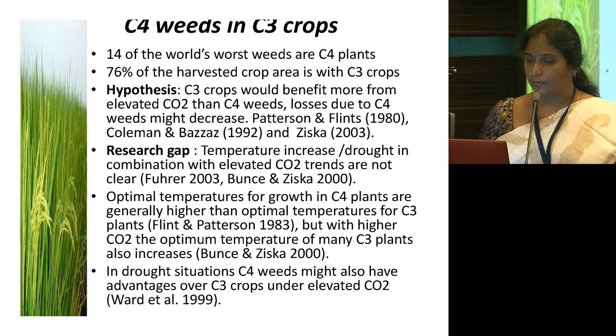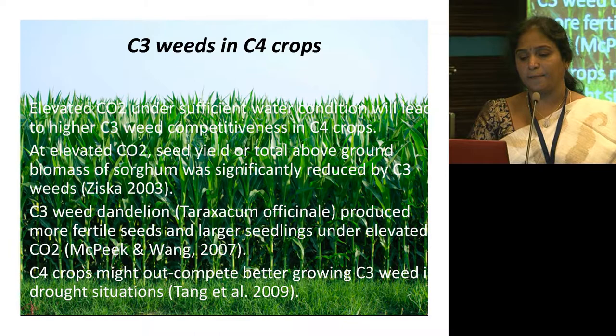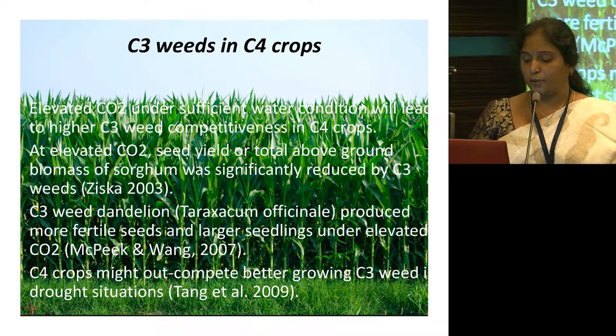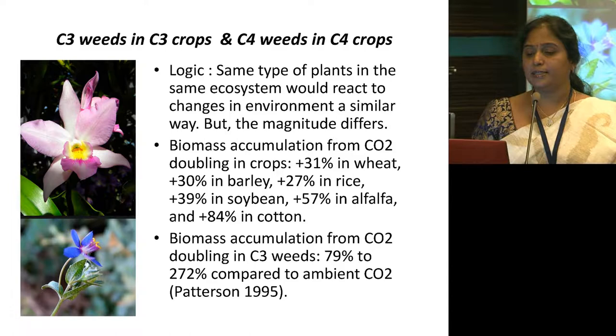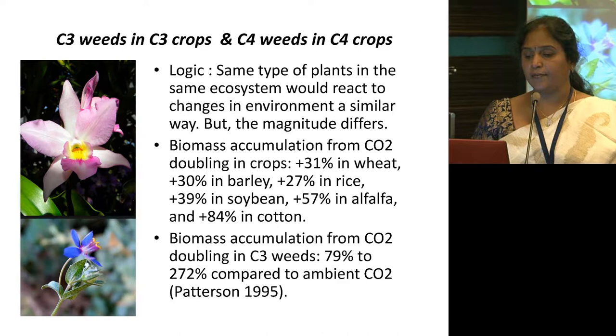For C3 weeds on C4 crops, the opposite condition applies — C3 weeds, because of their response to elevated CO2 and their range, will definitely create much more problems for C4 crops. For C3 weeds with C3 crops and C4 weeds with C4 crops, the logic is that the same type of plants in the same ecosystem would react to environmental changes in a similar way, but the magnitude differs.